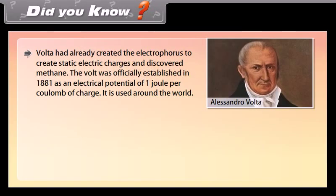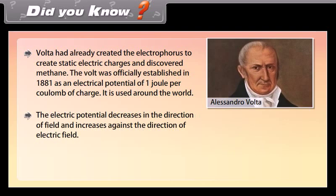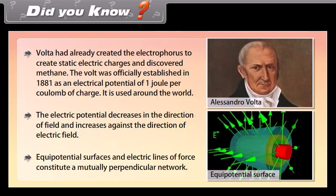Did you know? Volta had already created the electrophorus to generate static electric charges and also discovered methane. The volt was officially established in 1881 as an electrical potential of 1 joule per coulomb of charge, and it is used around the world. The electric potential decreases in the direction of the field and increases against the direction of the electric field. Equipotential surfaces and electric lines of force constitute a mutually perpendicular network.